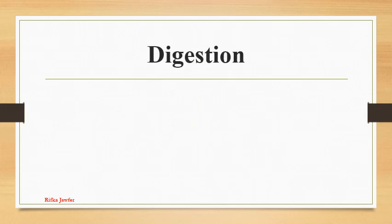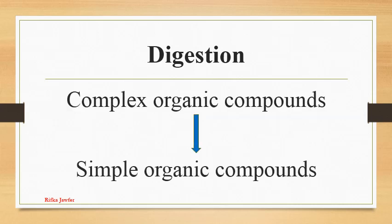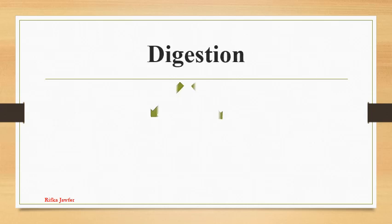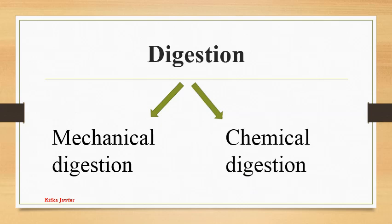Digestion is the process of converting complex organic compounds into simple organic compounds that can be absorbed into the human body. There are two processes of digestion. Mechanical digestion alters the physical nature of food, e.g. breaking down food into particles. Chemical digestion is where insoluble complex compounds are broken down into simple molecules by enzymes, e.g. starch converted to maltose by amylase.